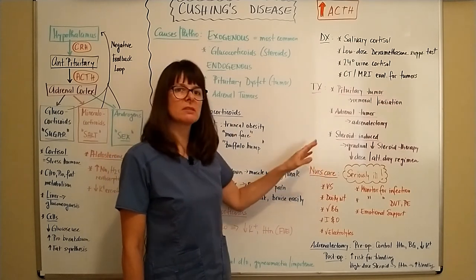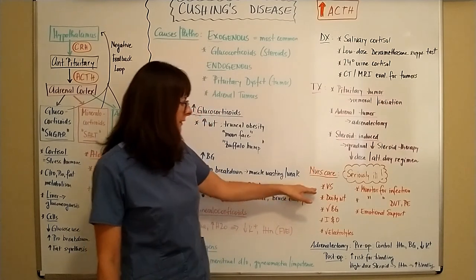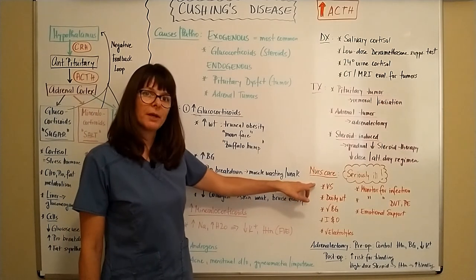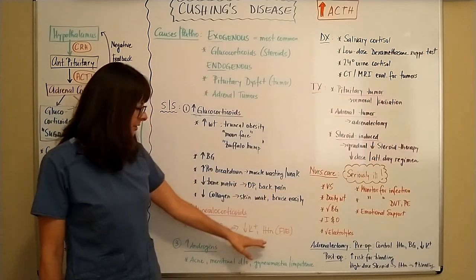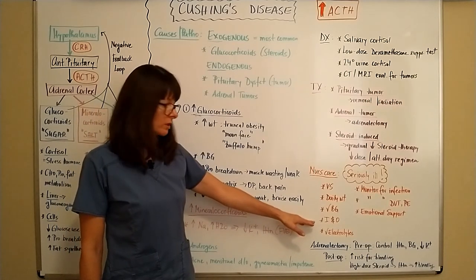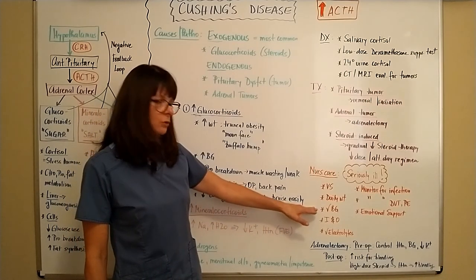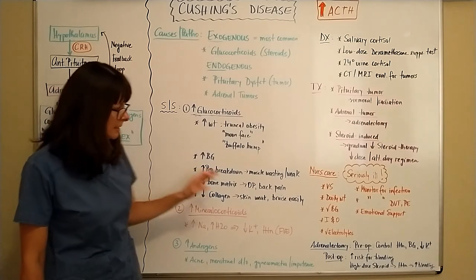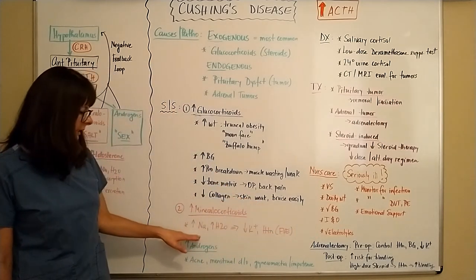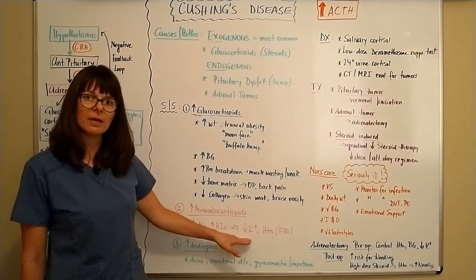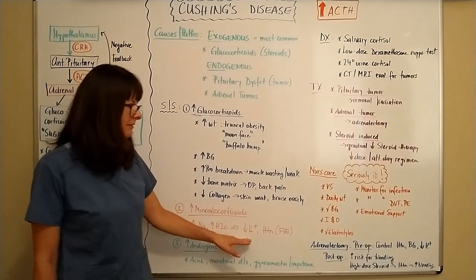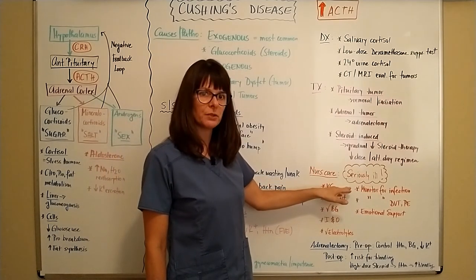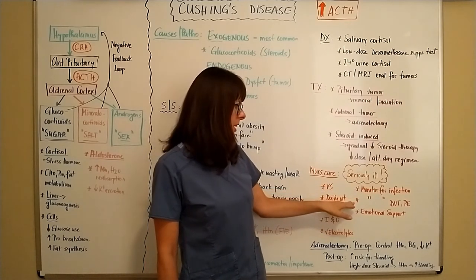Patients with Cushing's disease can be seriously ill. Because mineralocorticoids affect blood pressure, we must be diligent about monitoring vital signs and daily weight to monitor for fluid volume excess. Intake and output monitoring is also important for that reason. We need to check blood sugars very frequently because glucocorticoids can elevate blood sugar. We also need to check electrolytes because sodium can be elevated and hypokalemia can occur, which is always worrisome regarding cardiac activity. Patients are also prone to infection, so we must monitor diligently for that, as well as DVT and PE.